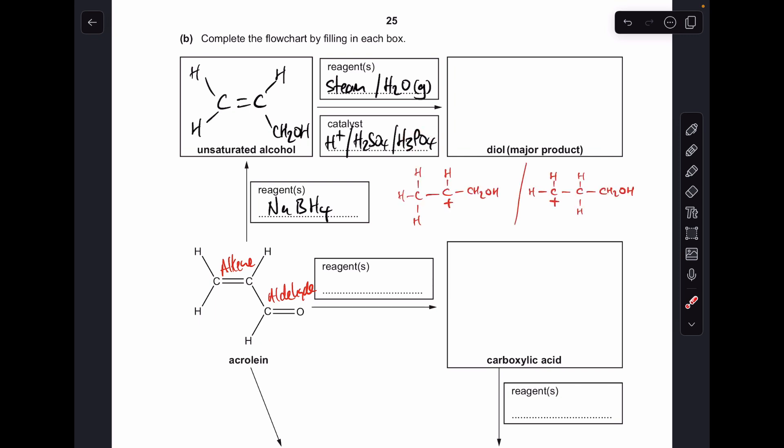To get the correct structure for the diol we've got to consider the carbocations that would form in the mechanism. When you react steam with an alkene the hydrogen is going to add first. So the hydrogen can either go on this carbon here generating this carbocation, or it can go on this carbon here and that would generate that carbocation.